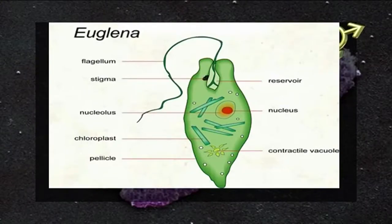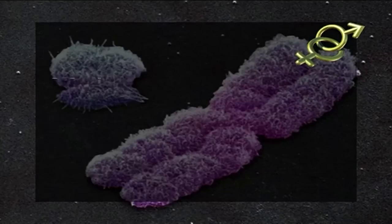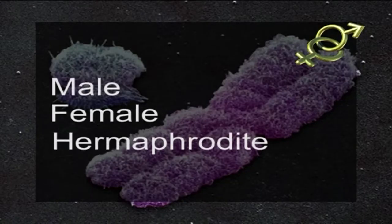Sex refers to contrasting characters exhibited by male and female individuals or organs within the same species. The sex of an individual can be determined at several levels. Unicellular organisms can have simple systems for sex determination, but multicellular species differ greatly in the strategies for generating sex differences. Determination and differentiation of sex are concerned with the factors responsible for making an individual male, female, or hermaphrodite.